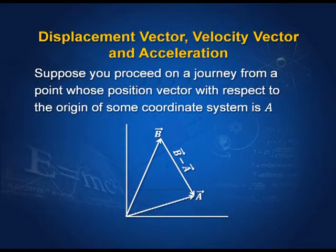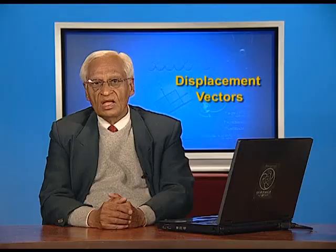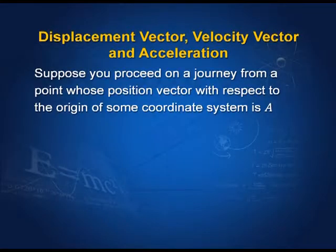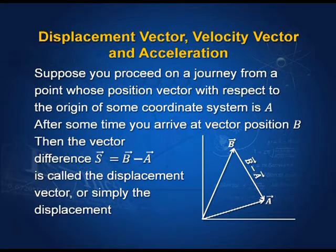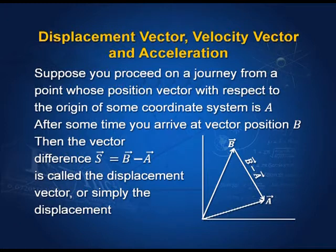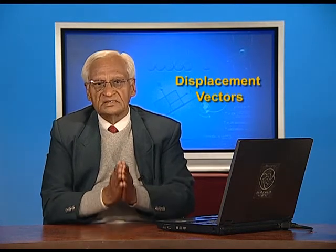Suppose you are at point A, whose position is given by vector A from the origin to the point where we are located. So our position vector is A. After some time, suppose we reach position vector B. Then the difference between B and A is known as the displacement vector. Both vector A and vector B are our positions with respect to a certain coordinate system. The difference between the final position and the initial position is the displacement vector B minus A. The displacement vector, denoted by capital S, is equal to vector B minus vector A. It is called displacement vector, or simply displacement, but you must remember that it is a vector.